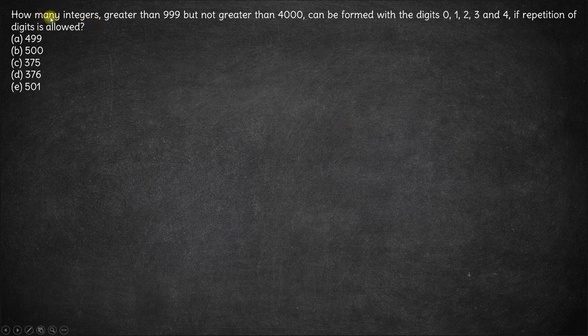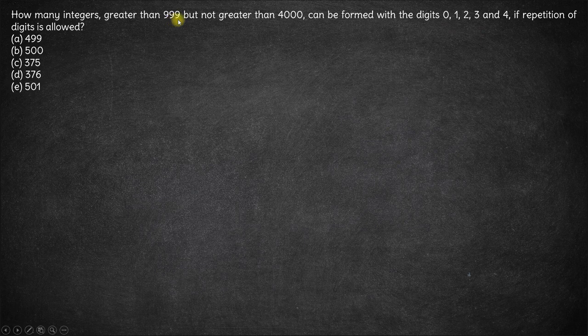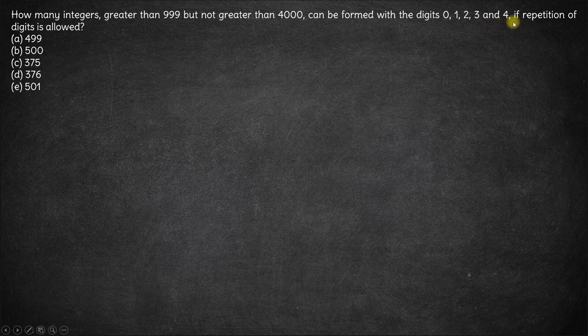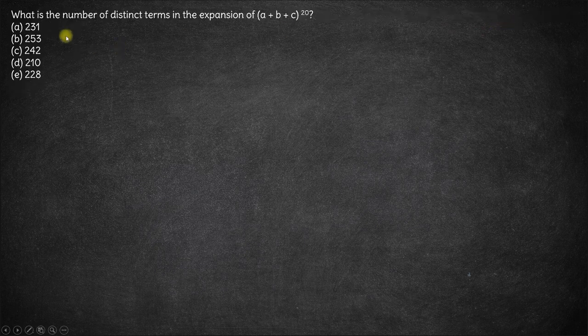Hi, here we have how many integers greater than triple nine, so basically four digit numbers, but not greater than 4000 can be formed with the digits 0, 1, 2, 3 and 4 if repetition of digits is allowed.